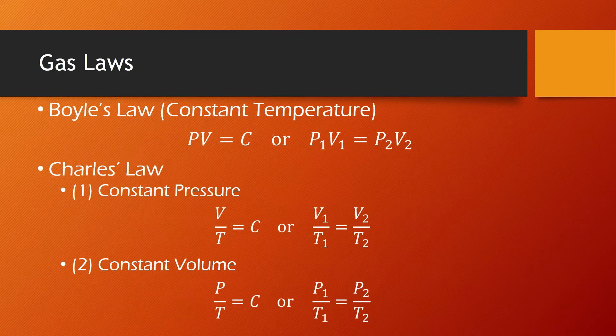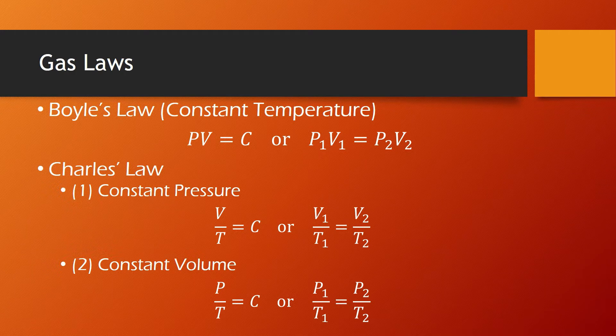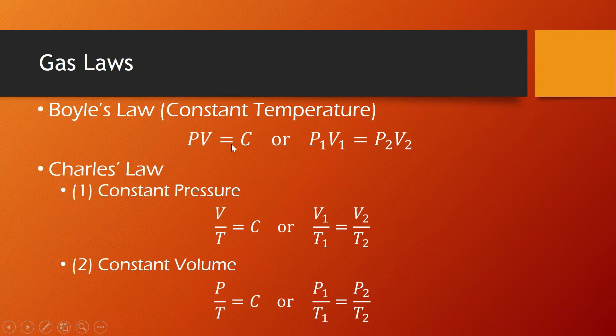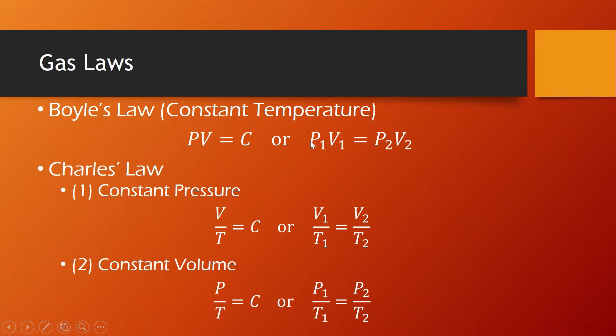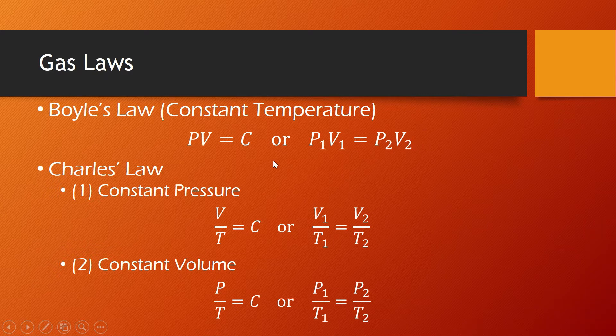So by formula, according to Boyle's law at constant temperature, the P or the pressure times V or the volume is constant. From the first state, pressure 1 times volume 1 is equal to the second pressure and the second volume, or P1V1 equals P2V2.